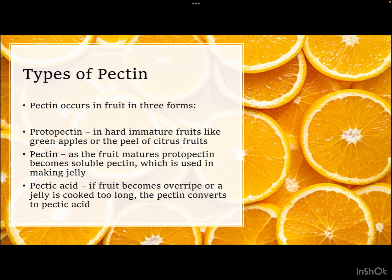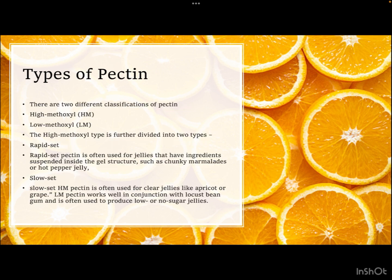Pectin has various forms. Protopectin is present in hard, immature, green fruits like green apples or the peels of citrus fruits. As the fruit matures, protopectin becomes soluble pectin, which is used in making jelly. If the fruit becomes very ripe or overripe, we get the third form — pectic acid. A related form is pectinic acid. All these forms vary chemically in their degree of methylation, as the structure of pectin has a methoxyl group at one end, and varying degrees of methoxy group addition leads to the different forms.